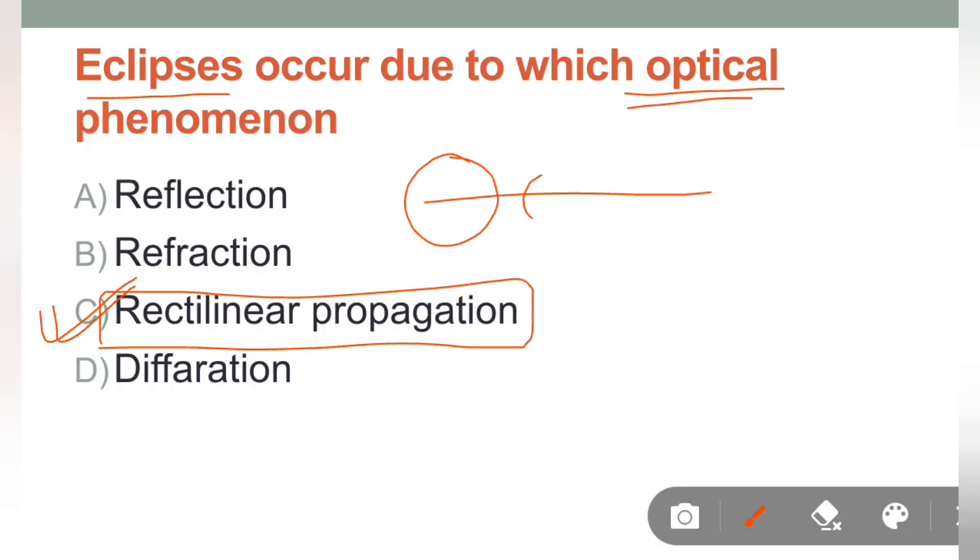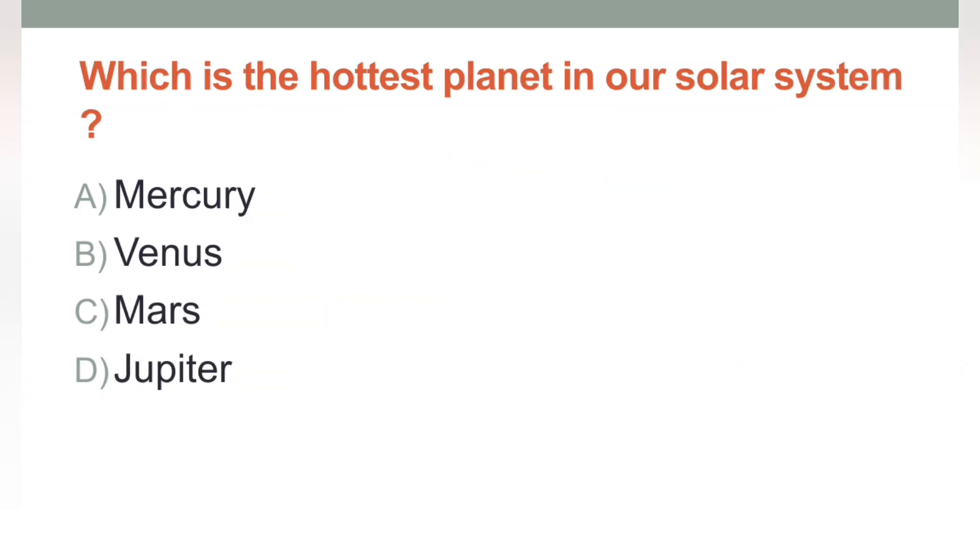Toh jab eclipse hota hai, toh ek line mein hi hota hai, sun ek stable hota hai, beech mein kabhi moon aa jayega, aur sun stable aage, beech mein kabhi Earth aa jayega, aur uske baad moon aa jayega. Toh yahan par solar eclipse, sorry, eclipse aur lunar eclipse, solar eclipse and lunar eclipse banayega. Toh iska correct answer ho jayega rectilinear propagation.